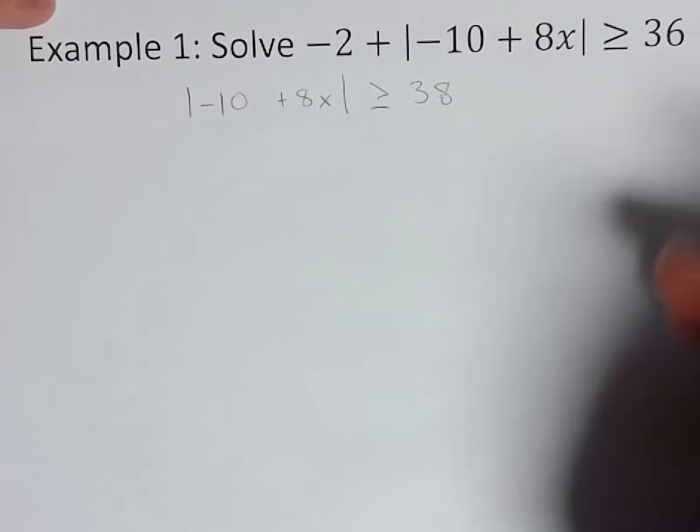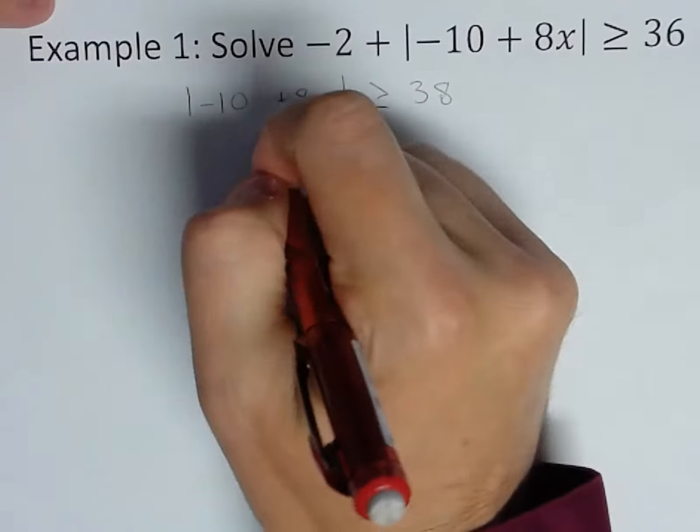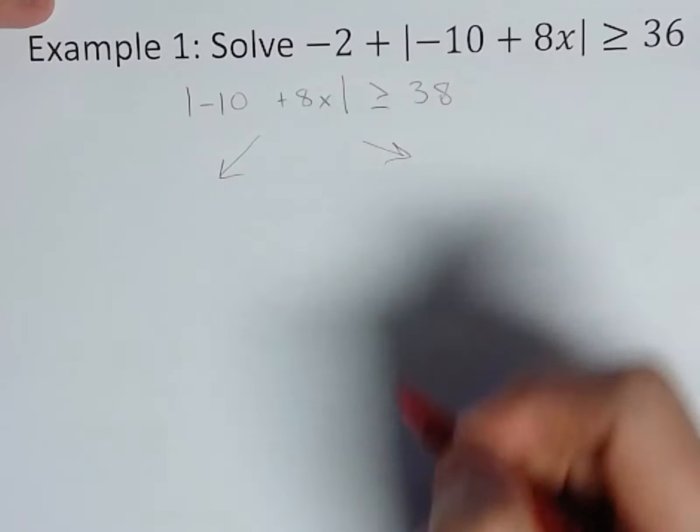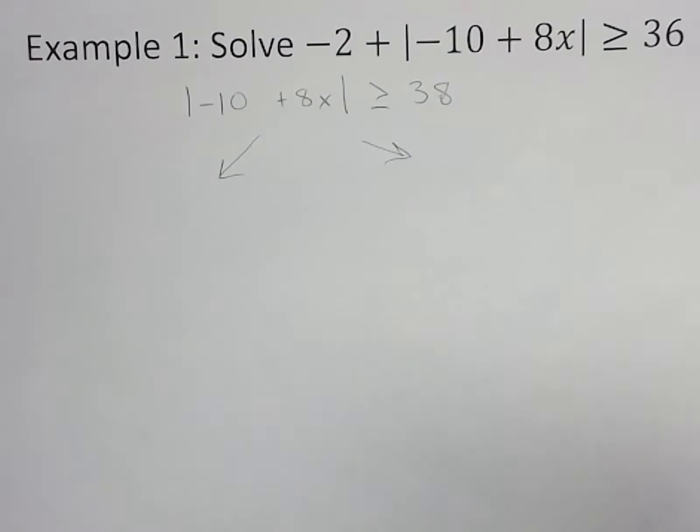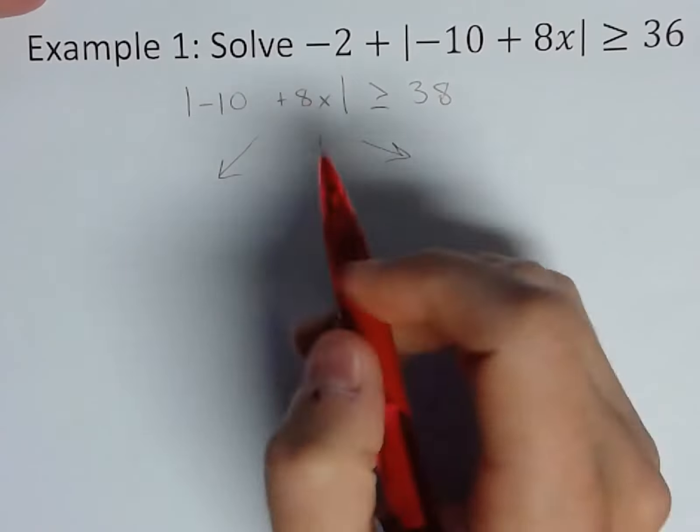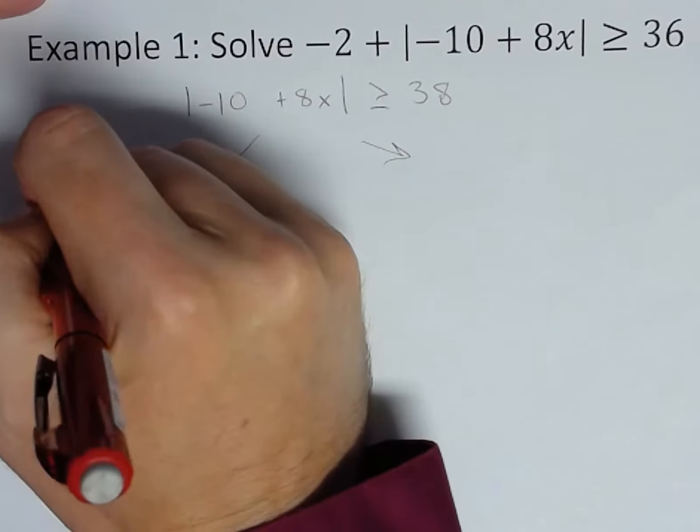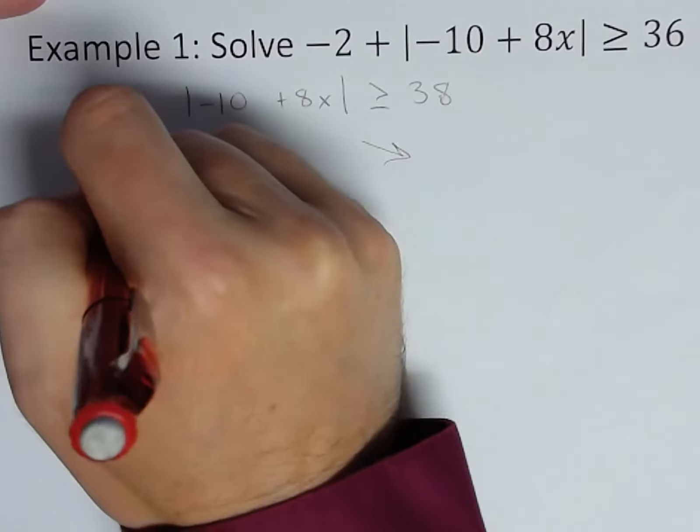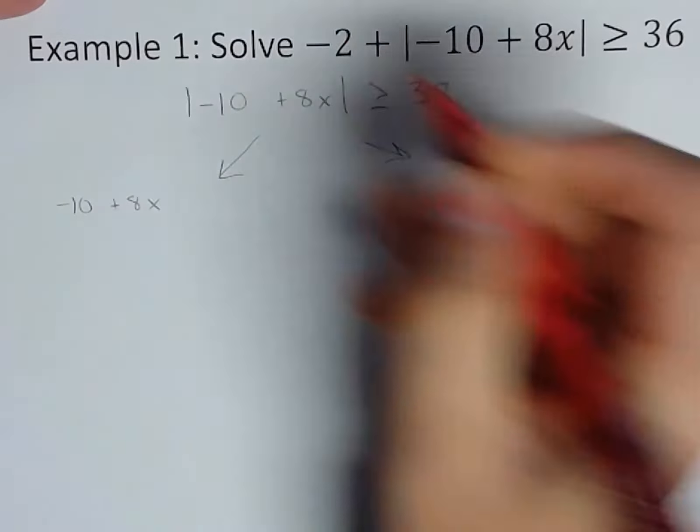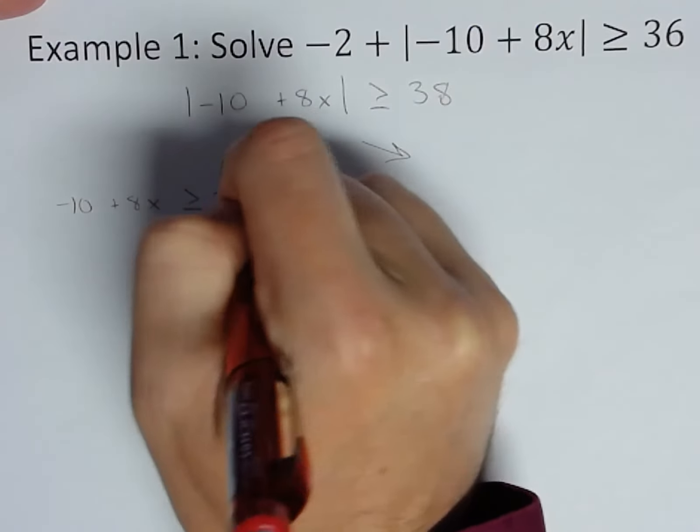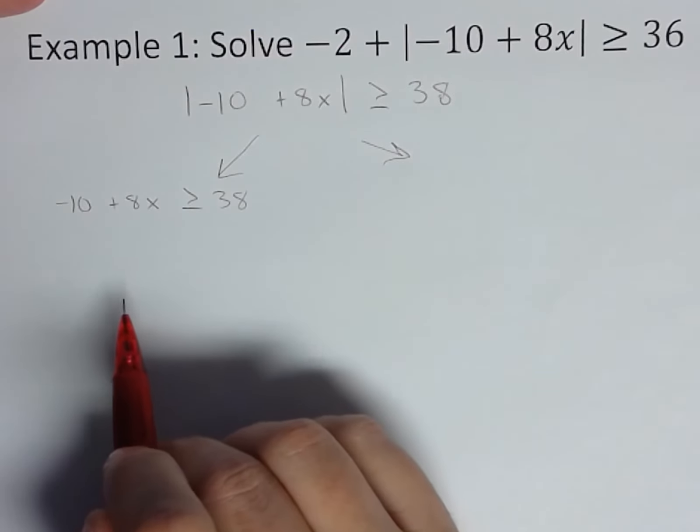So positive case, right? Just kind of follow what I did before. You don't need to do the arrows, but I'm just illustrating we're always going to get two equations here. We've got our positive case, nothing changes, just get rid of those absolute values: negative 10 plus 8x greater than or equal to 38.